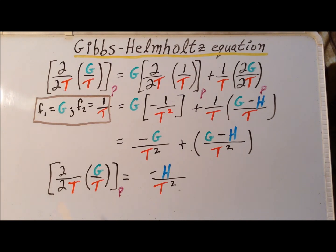This gives us that the partial derivative with respect to T of G divided by T, at constant pressure, is simply minus the enthalpy H divided by T squared. This is the Gibbs-Helmholtz equation.